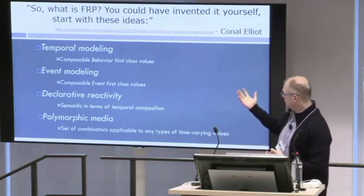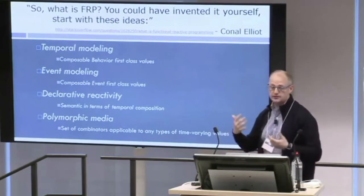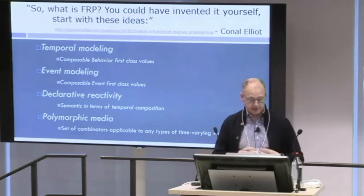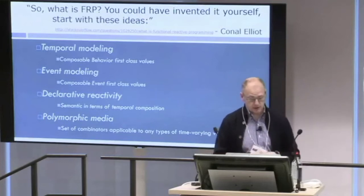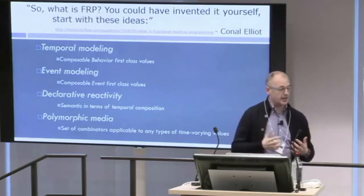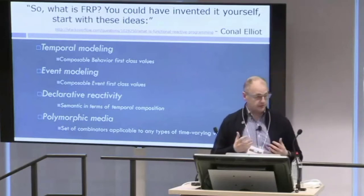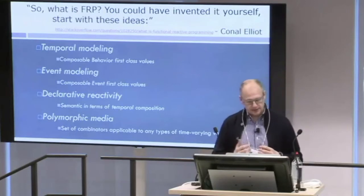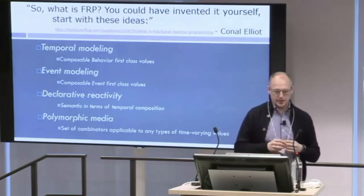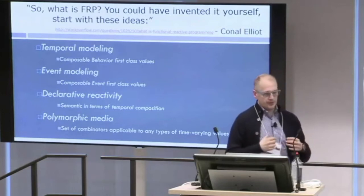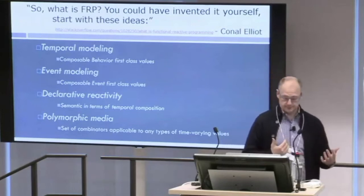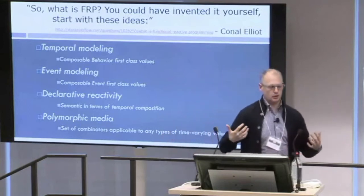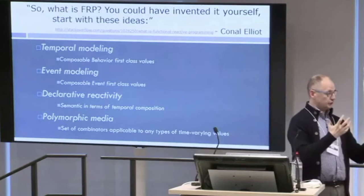The four main points are: temporal modeling, which covers behavior as a first-class concept that can be composed and created from other behaviors; event modeling, which covers the discrete side — events are first-class, can create or change behaviors; current reactivity, where behaviors are expressed in reaction to events; and polymorphic combinators, which describe the set of combinators used to combine events and behaviors together.